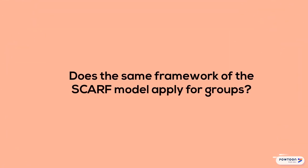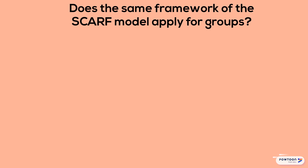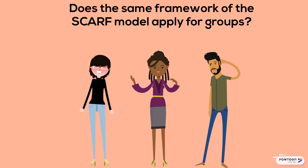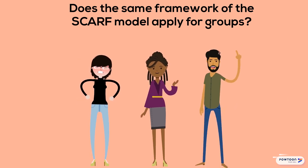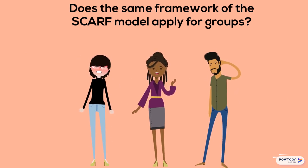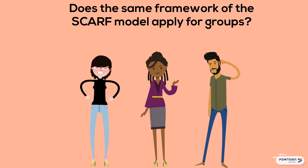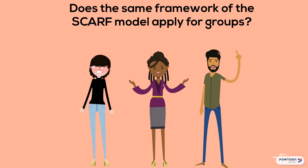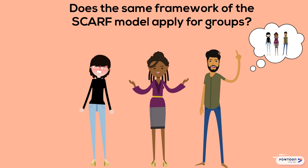Does the same framework of the SCARF model apply for groups? In relationships between people, what's not working for the team? What's being threatened for the team? So it's multi-leveled — you can think about it individually, but also, if you're a manager of a group, you could be thinking about why isn't the team working well together. You'd have to look at the individual dynamics through the lens of the SCARF model with each person.